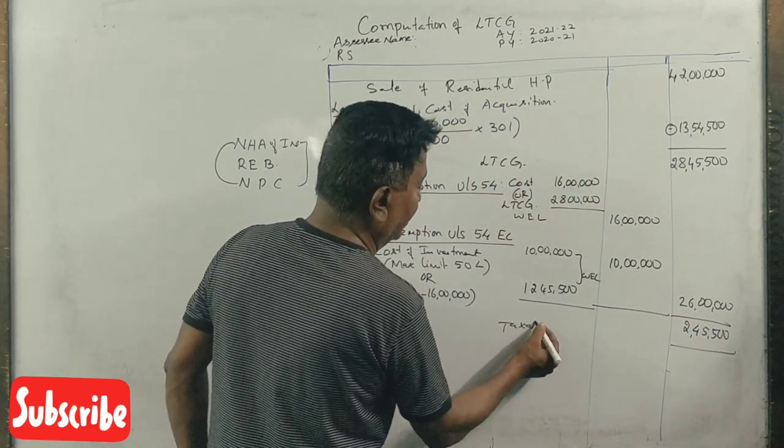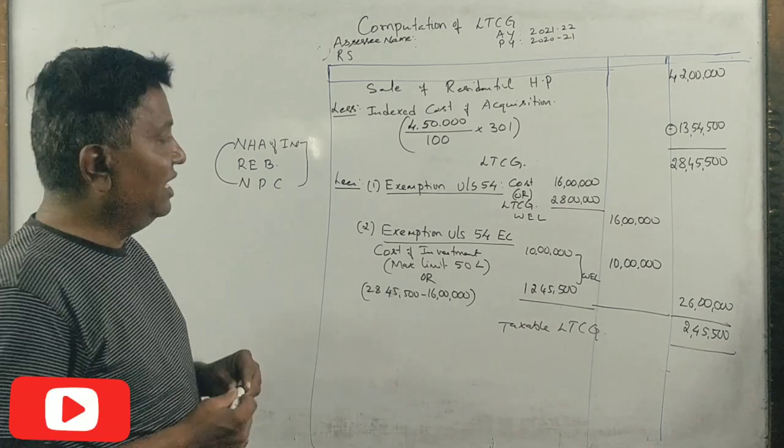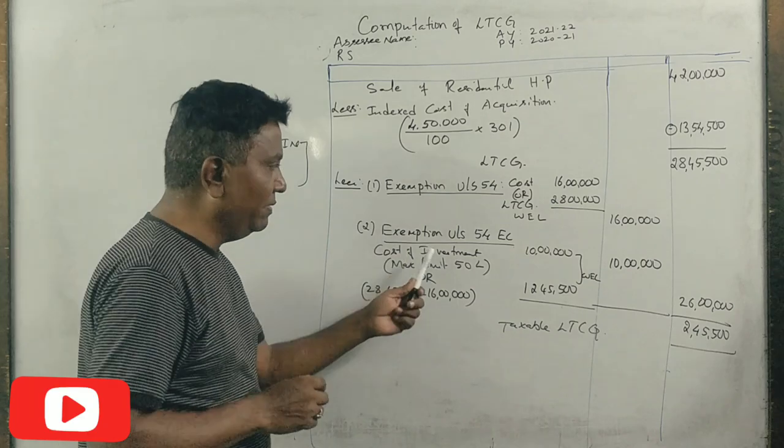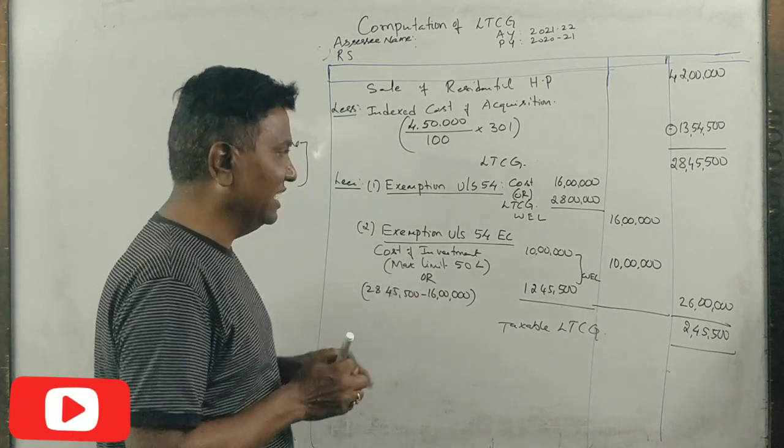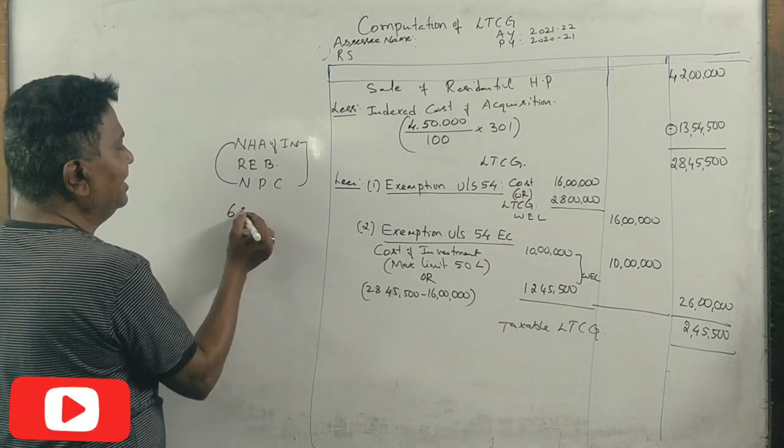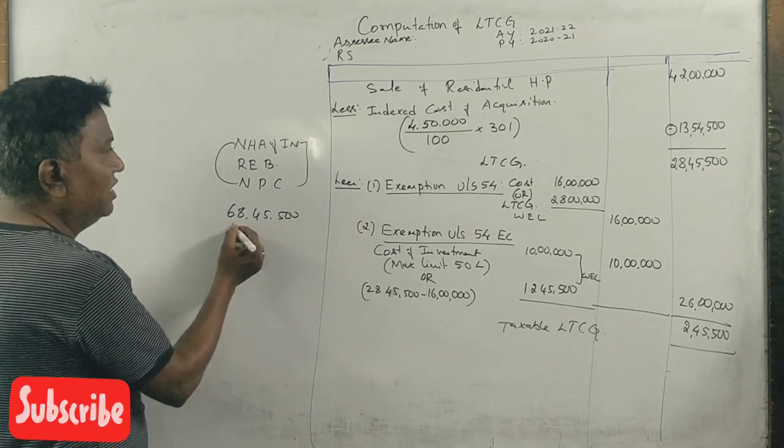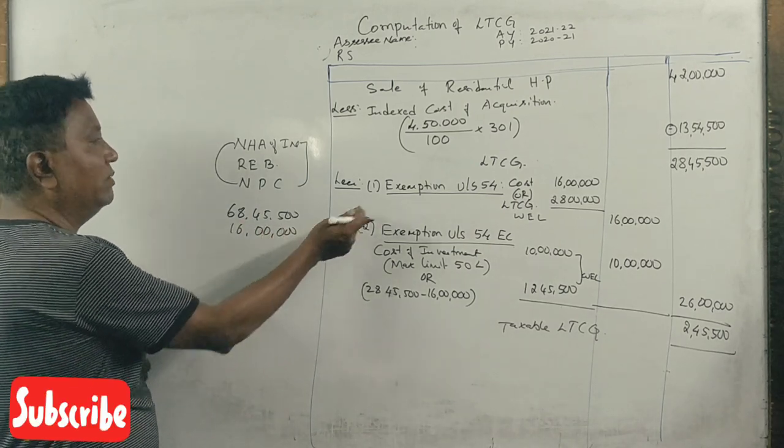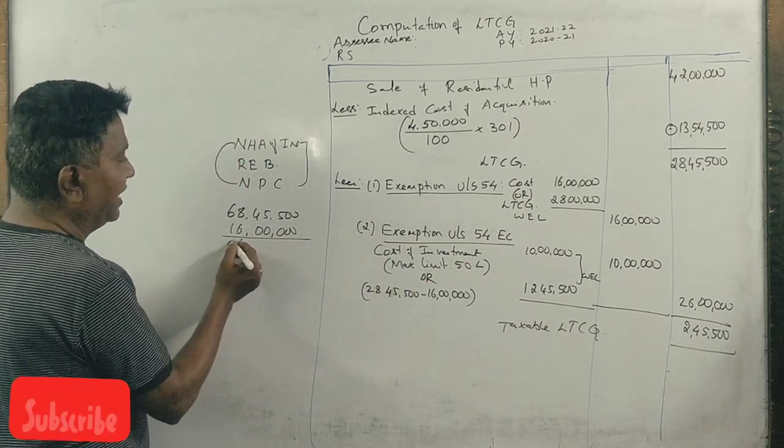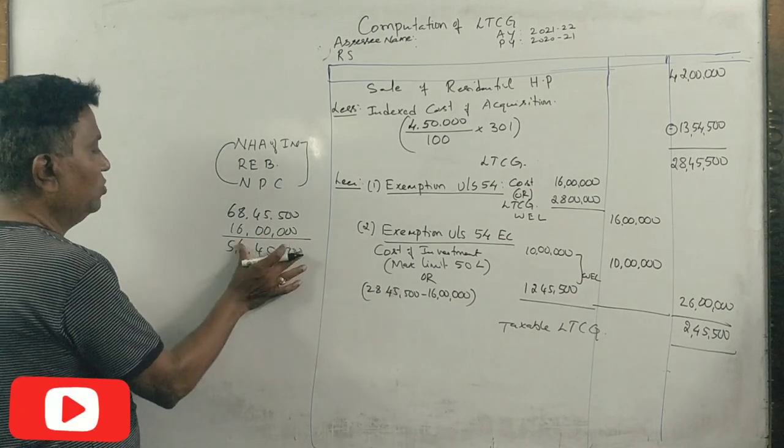The taxable long-term capital gains. Now if you have a question, what is the exemption under 54 EC? Suppose long term capital gain is 68,45,500. Now 16 lakh rupees is already exempted. What is the exemption under 54 EC? It is 52,45,500, but investment is only 10 lakhs.